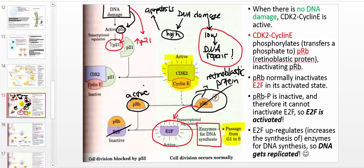Under normal conditions when there's no mutation and we have the capacity to proceed into the S phase: CDK2 phosphorylates and inactivates retinoblastic protein. That leads to activation of E2F. E2F then facilitates the synthesis of enzymes needed for DNA replication, and you ultimately get entry into the S phase of the cell cycle. This only occurs when you have no mutation in the DNA.